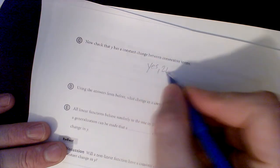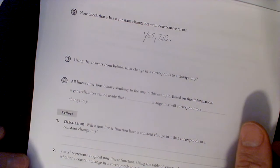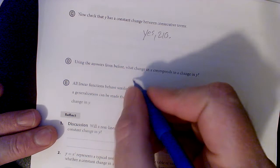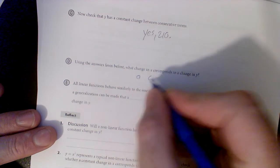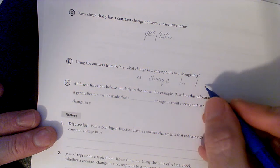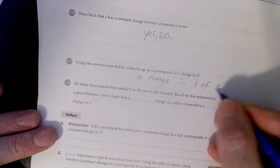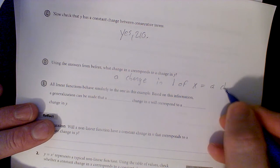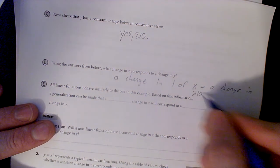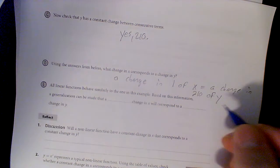Using the answers below: what change in the X corresponds to a change in Y? Well, a change in 1 of X equals a change in 210 of Y, right? Every time X goes up one, Y goes up 210.